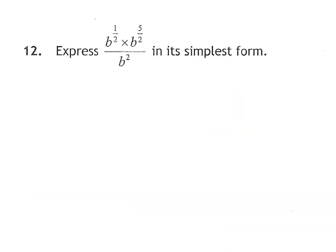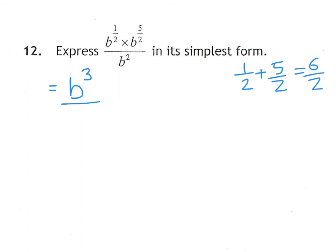Question 12 involves fractional indices. When multiplying fractions you add the powers: b^(1/2) × b^(5/2) = b^(6/2) = b³. Then b³ ÷ b² — dividing means you subtract the powers — gives b^1, which is just b.